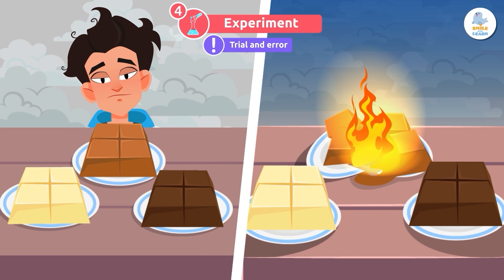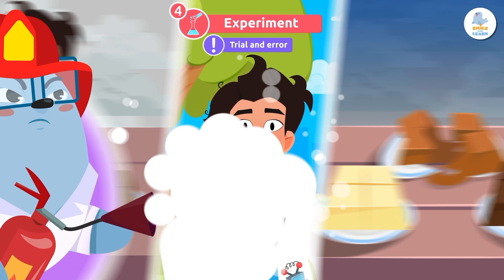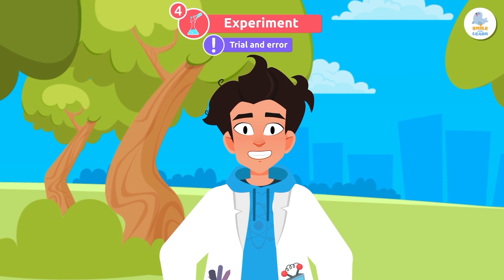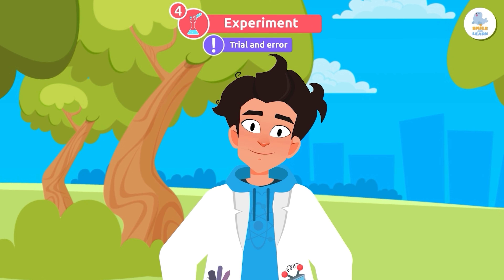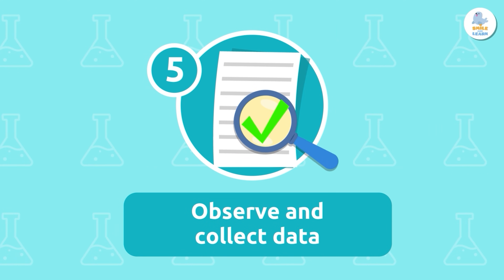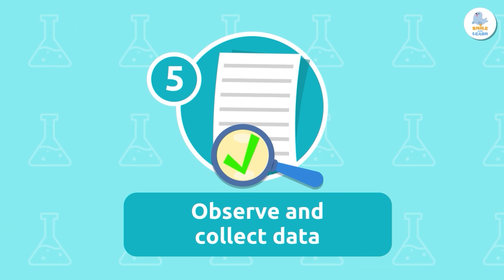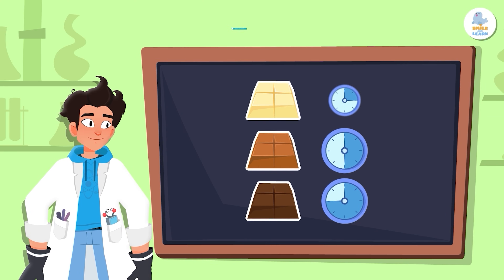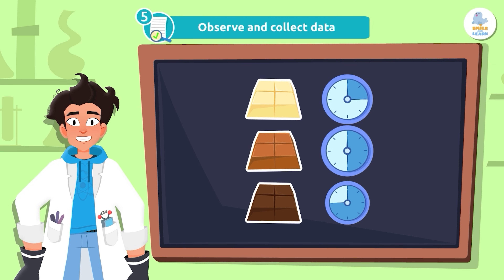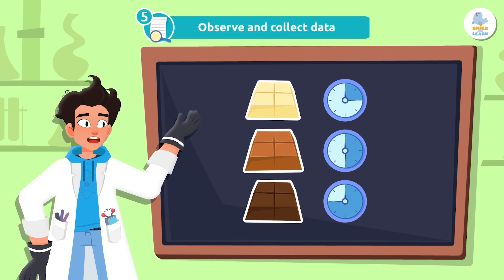Sometimes experiments don't turn out as we expect, and that's okay. Trial and error is an important part of the scientific method — we can learn a lot from our mistakes and make changes so that the next time goes better. We observe what happens and record it: how long did it take each piece of chocolate to melt, which one melted first, and was it always the same one?